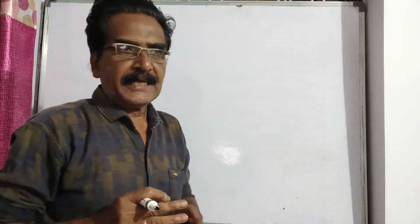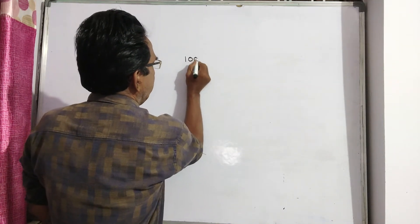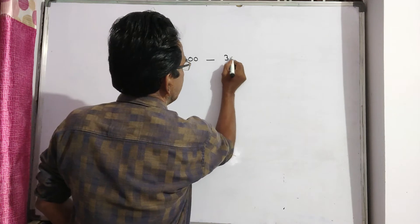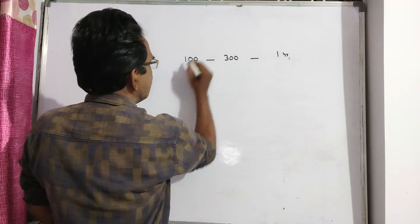This is a simple problem, friends. Becoming nine times in two years means the amount is tripled in every one year. That is, 100 rupees becomes 300 in one year.